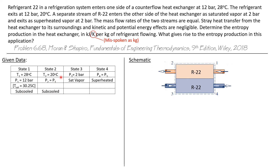State two is at 20 degrees C and at the same pressure as state one, 12 bar. Because it's even cooler than state one, it also must be a sub-cooled liquid. State three is at 2 bar and was given as a saturated vapor, so those two properties fully define state three. State four is at the same pressure as state three — no pressure drop across the heat exchanger — but it's simply described as superheated, so we don't have a fully defined state four at this point.